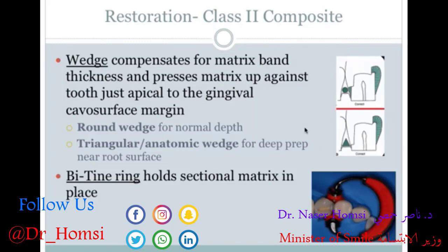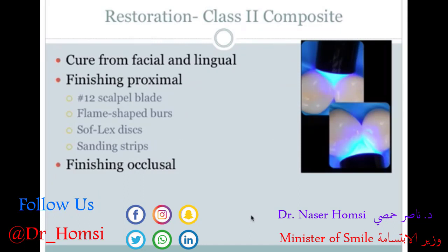As a general rule, use one wedge if the matrix band passes through one contact — for example an MO or DO preparation — and two wedges if the band passes through two surfaces, such as an MOD. A sectional matrix system can also be used for composites — using clear plastic strips instead of metal bands, with a ring to hold everything in place.